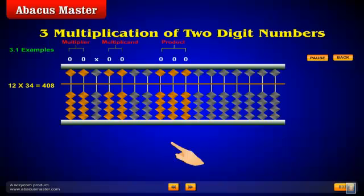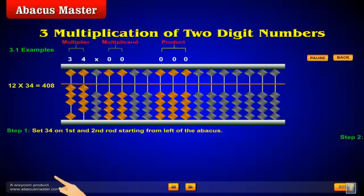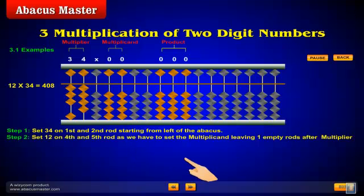Example: 12 multiplied by 34. Step 1: Set 34 on the first and second rod starting from the left of the abacus. Step 2: Set 12 on the fourth and fifth rod, as we have to set the multiplicand leaving one empty rod after the multiplier.